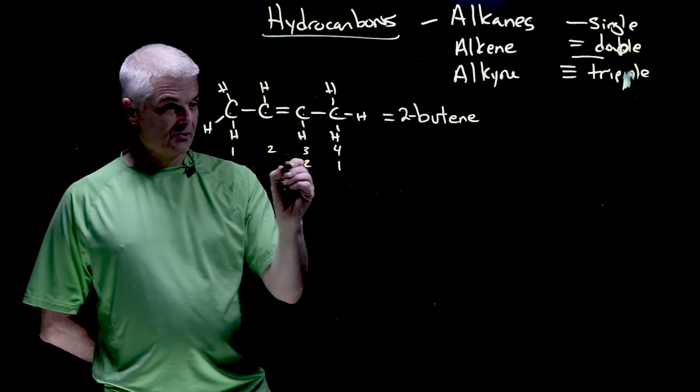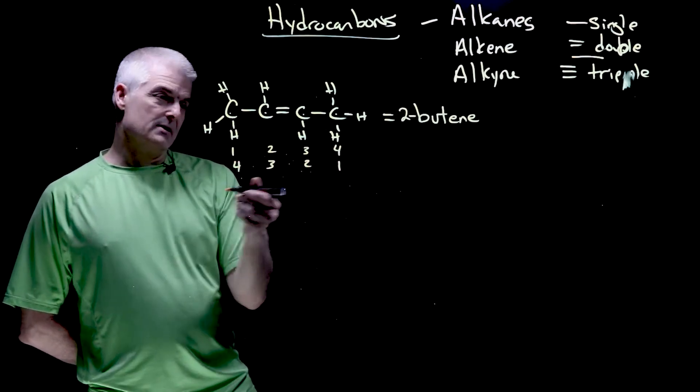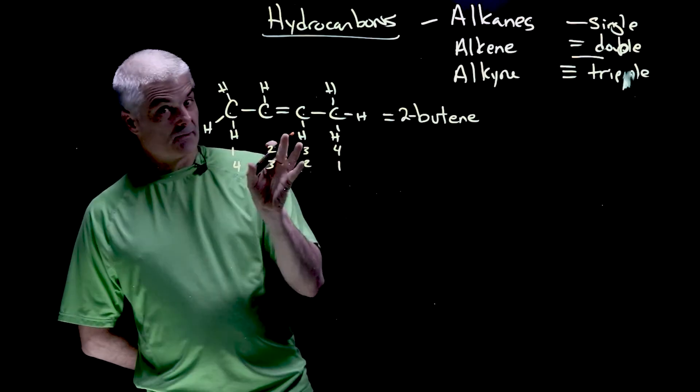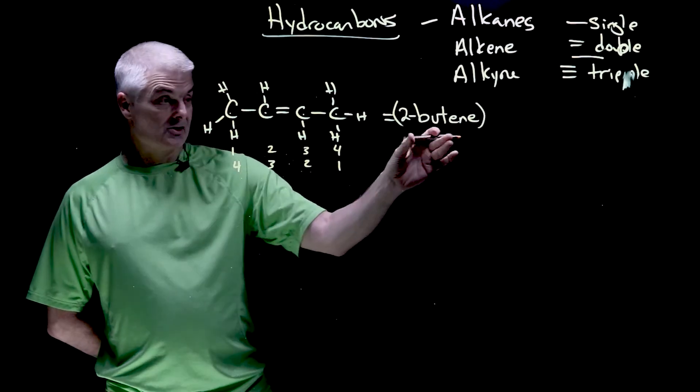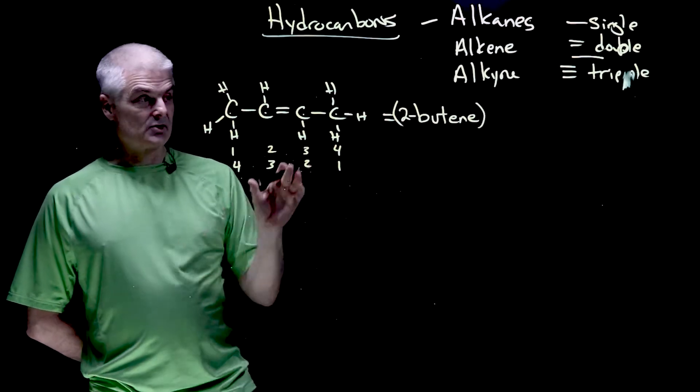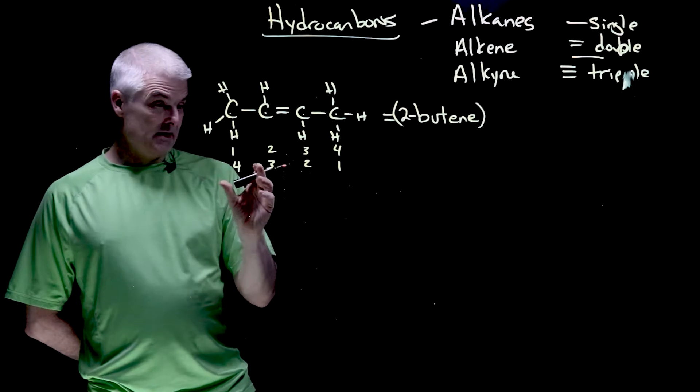By the way, we could also call it one, two, three, four, right? We could go backwards. So it's actually the lowest number that we can get. So if we want to say where the bond is, we have to. We put the two in front. So that's called two butyne.